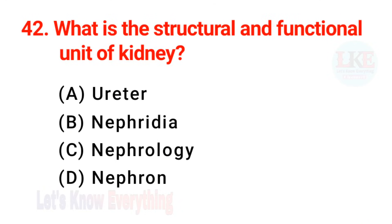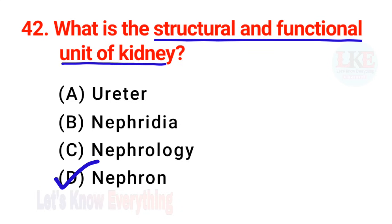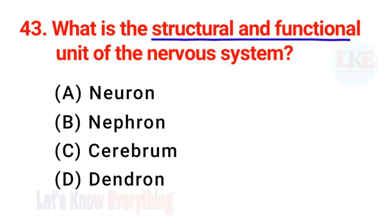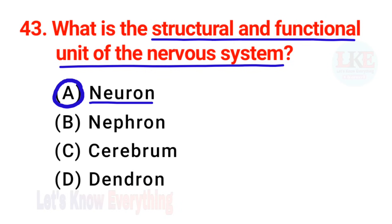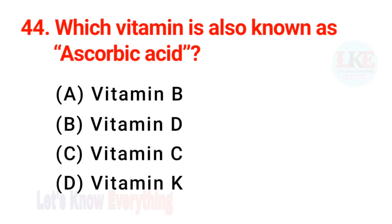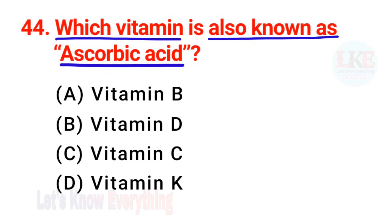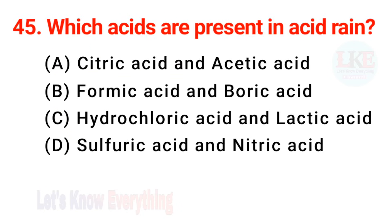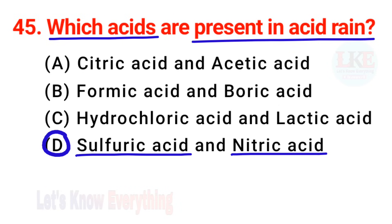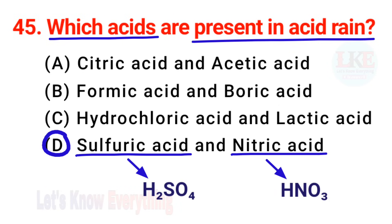Question number 42: what is the structural and functional unit of the kidney? Right answer — nephron. Question number 43: what is the structural and functional unit of the nervous system? Right answer — neuron. Neuron is also known as nerve cell. Question number 44: which vitamin is also known as ascorbic acid? Right answer — vitamin C. Question number 45: which acids are present in acid rain? Very important question. Right answer option D — sulfuric acid and nitric acid, H2SO4 and HNO3.